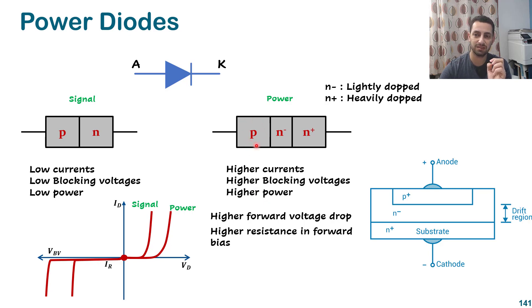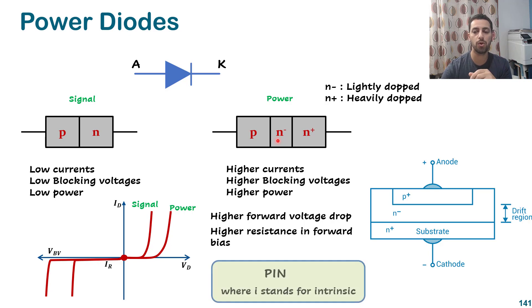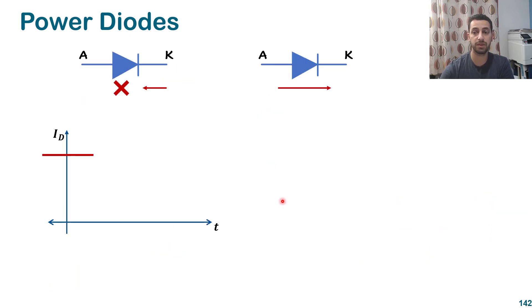Because we have the p-type and n-type with another lightly doped material between them that is very close to pure silicon or pure semiconductor, they sometimes call this structure PIN — P-type, Intrinsic (pure semiconductor), and N-type. This is another name used for the power diode. The power diode brings higher ratings, but it also introduces something called the reverse recovery time.